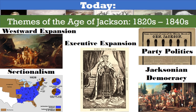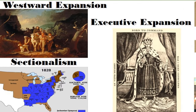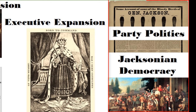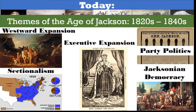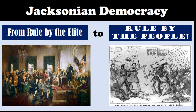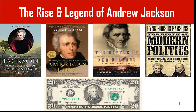In our previous lesson, we discussed the themes of the Age of Jackson, and we covered the beginnings of westward expansion and the rise of sectionalism. Today we'll look at the change in political elections with what is known as Jacksonian democracy — described as a shift from political rule by the often wealthy elite, which many of the founding fathers were, to something more resembling rule by the people. We'll also look at the rise and legend of Andrew Jackson, who came to symbolize this changing political landscape.